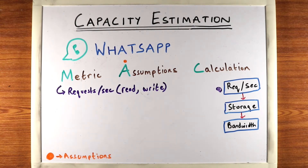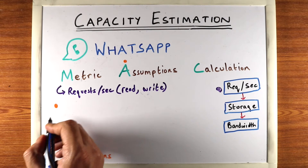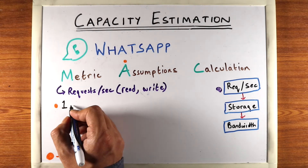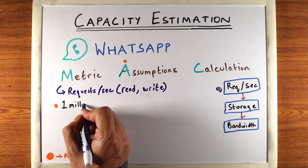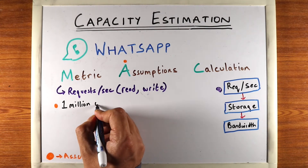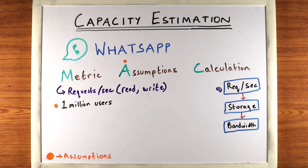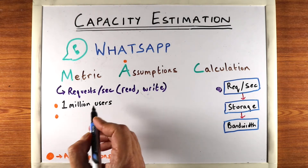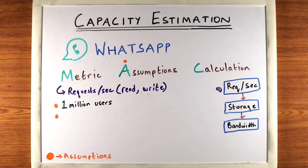Okay, so we've decided the metric. Now let's figure out what assumptions we need. A good assumption to start off with is the number of users. I like to usually start off with one million users — it's not a small number by any means, but it's also not super large to make our calculations too complicated. The second assumption we need for requests per second is the activity or usage of each user.